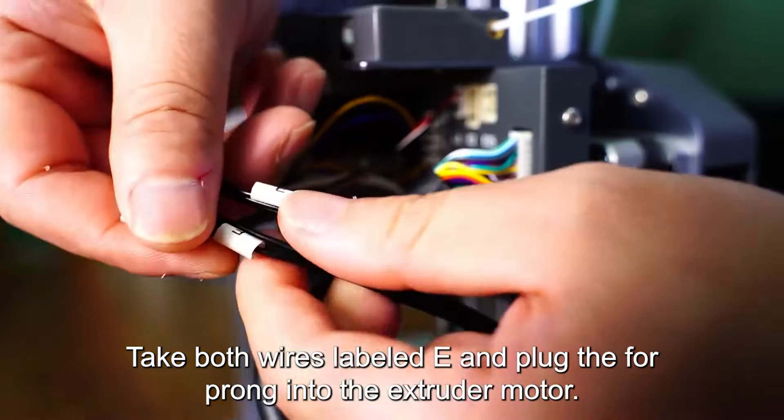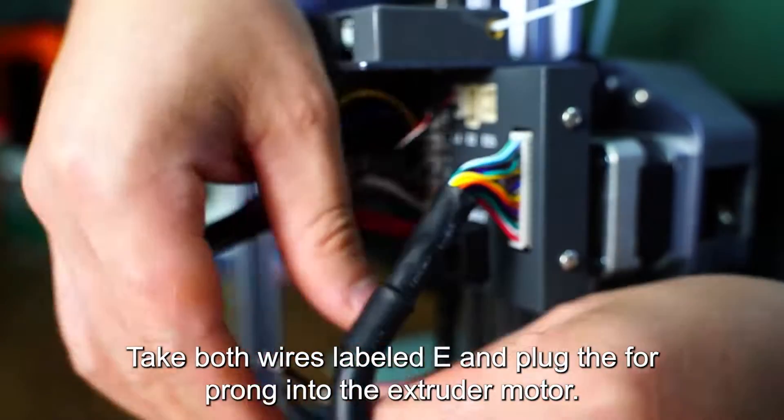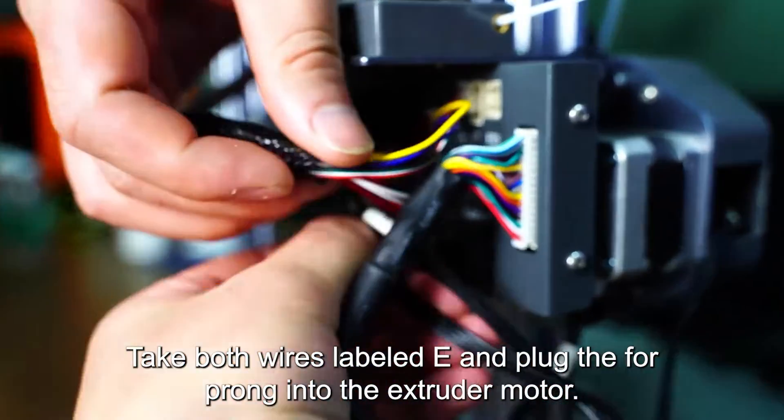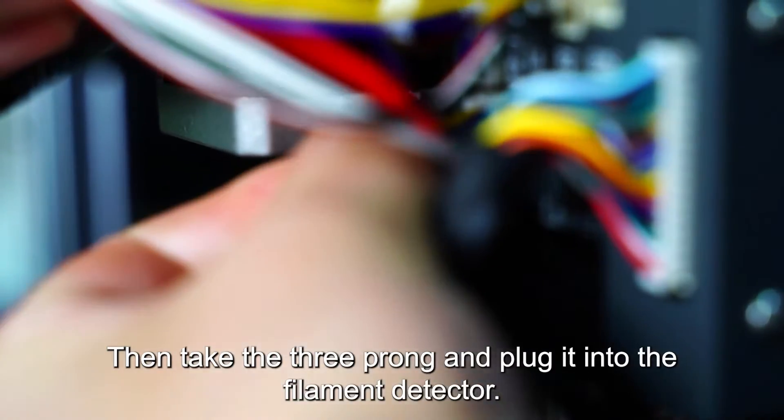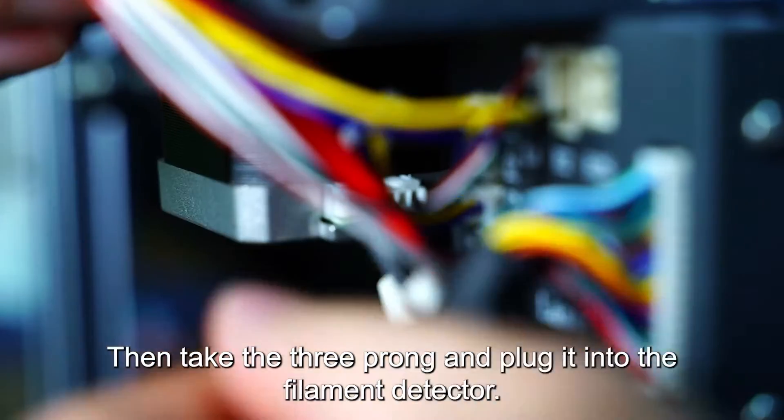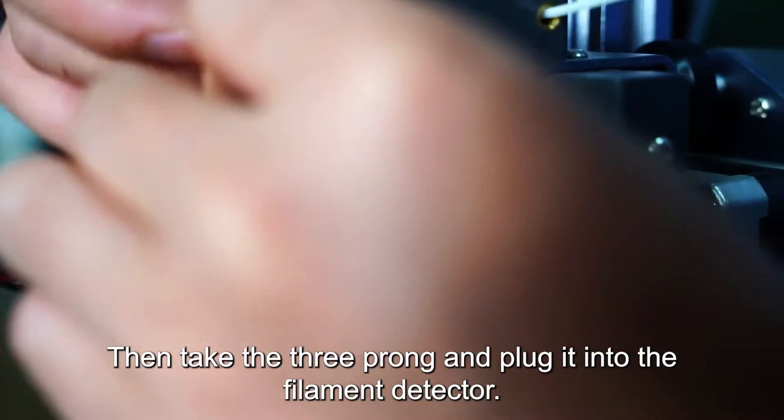Take both wires labeled E and plug the four prong into the extruder motor. Then take the three prong and plug it into the filament detector.